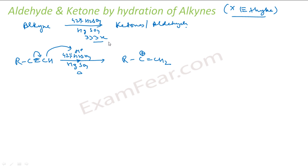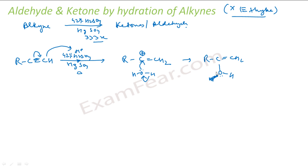Then water comes in — H₂O has a lone pair of electrons and is attracted by the positive charge, so it attacks the carbocation. What you get is RC(=CH₂)–OH₂⁺. The positive charge comes on oxygen, which is not stable, so H⁺ breaks off, giving an enol intermediate.